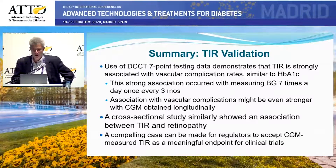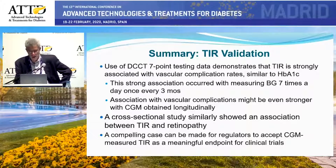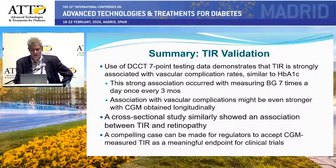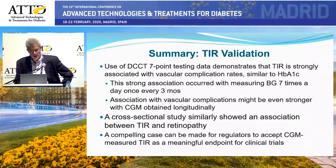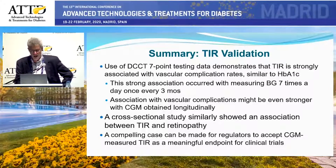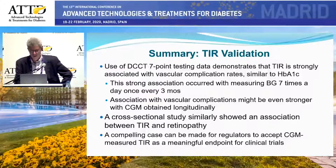To summarize: DCCT seven-point testing demonstrated time in range is strongly associated with vascular complication rates, similar to hemoglobin A1C. The cross-sectional study from China showed a similar association between time in range and retinopathy. Knowing the close relationship of time in range to hemoglobin A1C, plus the indirect data showing how CGM-measured time in range correlates with these outcomes, it's time to recognize this as an important endpoint for clinical trials.